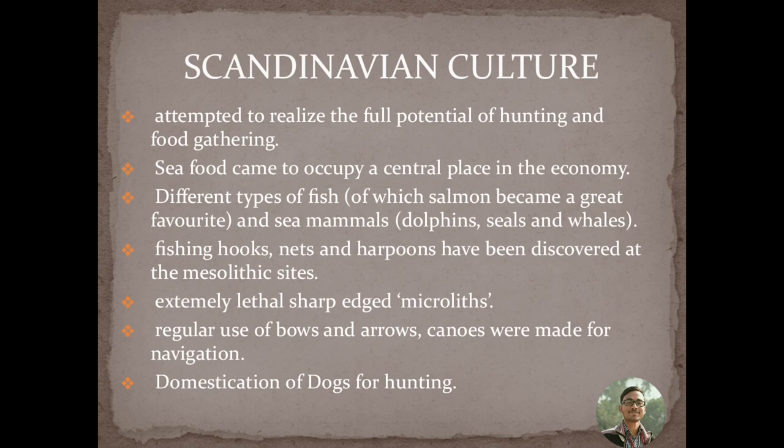Scandinavian culture attempted to realize the full potential of hunting and food gathering. Seafood came to occupy a central place in the economy; different types of fish — of which salmon became a great favourite — and sea animals like dolphins, seals, and whales were exploited. Fishing hooks, nets, and harpoons have been discovered at Mesolithic sites. Extremely small sub-edged microliths are a very important concept of the Mesolithic age. Regular use of bows and arrows was identified, canoes were made for navigation, and domestication of dogs for hunting is also evident.